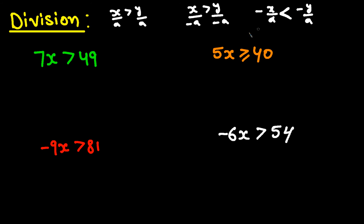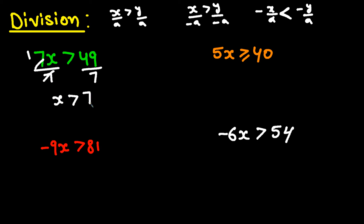First division example: 7x greater than 49. I want X on the left-hand side, so I divide both sides by 7. That gives me X greater than 7. Second: 5x greater than or equal to 40. Dividing both sides by 5 gives X greater than or equal to 8.